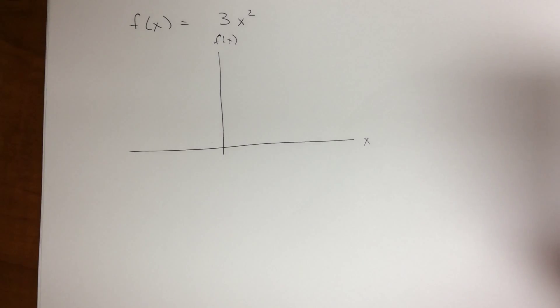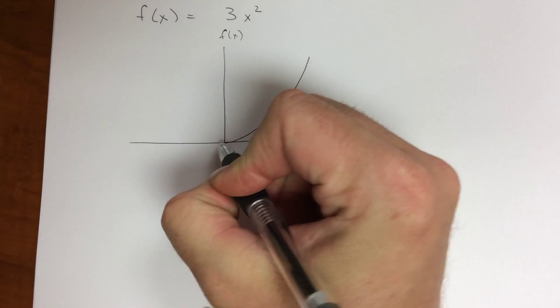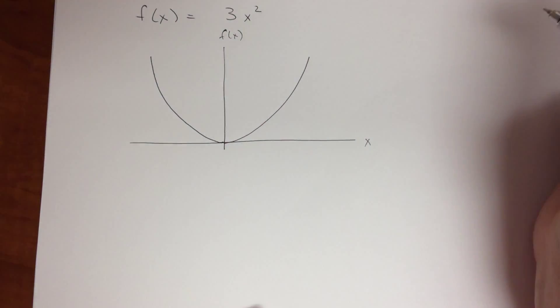So we're going to look at the example of f(x) equals 3x squared. Now 3x squared is a function that looks something like this. It looks a lot like x squared, it just increases at a much faster rate.